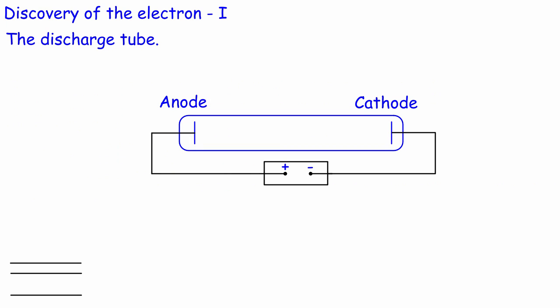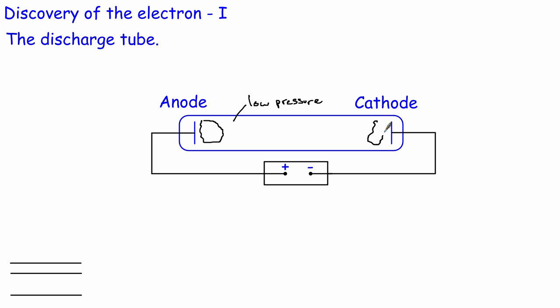When we look at cathode rays from a historical point of view, back in around about 1870, scientists discovered that if you took a glass tube and filled it with a low-pressure gas — and it's important that it's at low pressure — and then applied a high potential difference across this gas, the gas would conduct electricity and also it would glow. They also found that if you put a different type of gas in, you'd get a different colour.